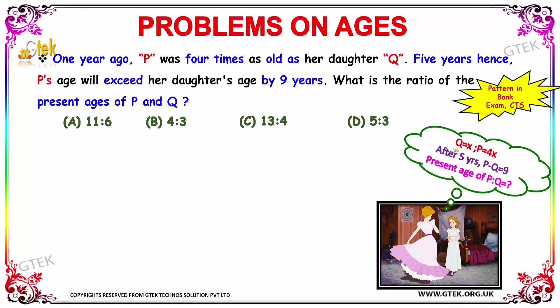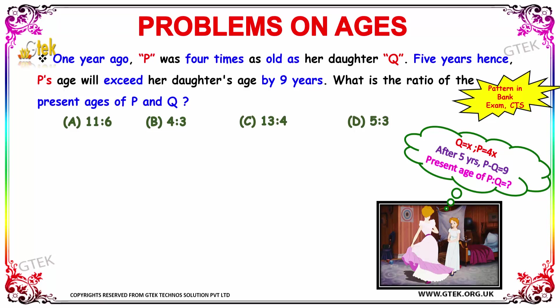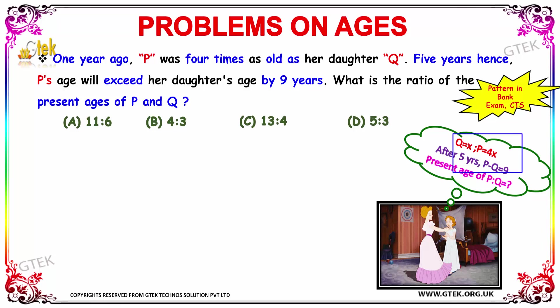It is given that 1 year ago, P was 4 times as old as her daughter. Say her daughter Q is having the age of X. Then 1 year ago, P's age was 4 times X.